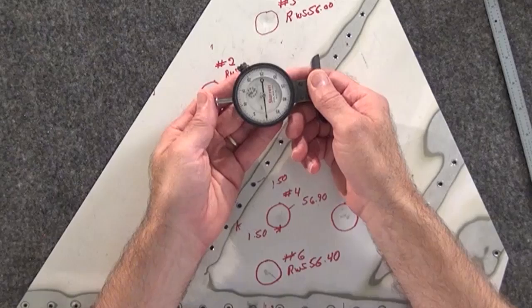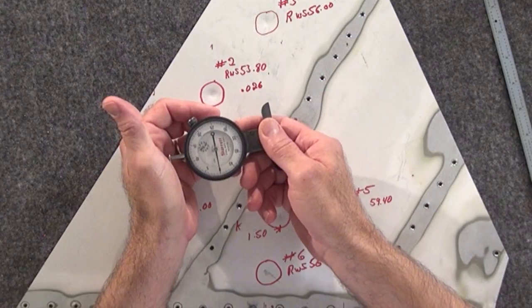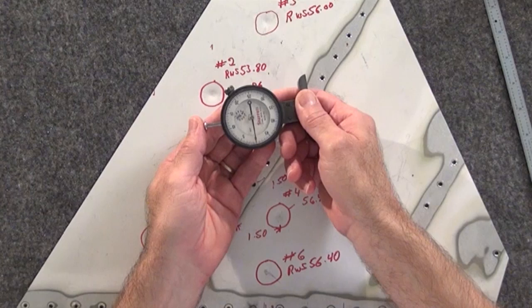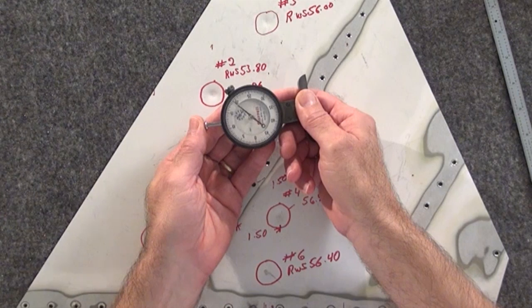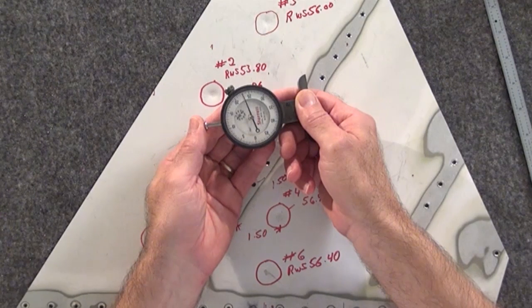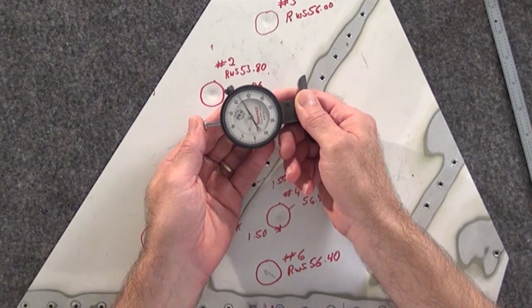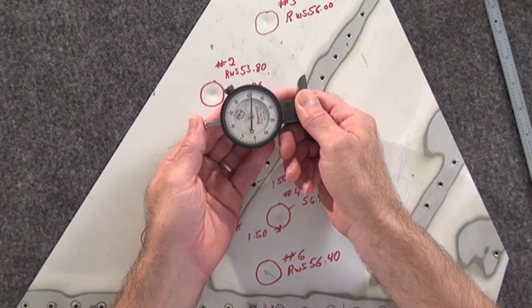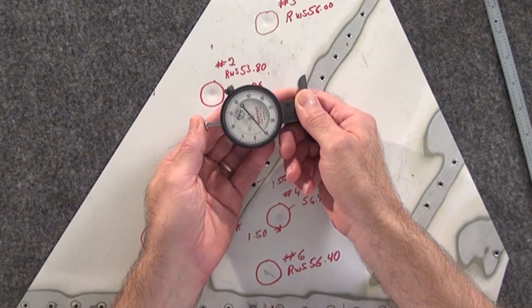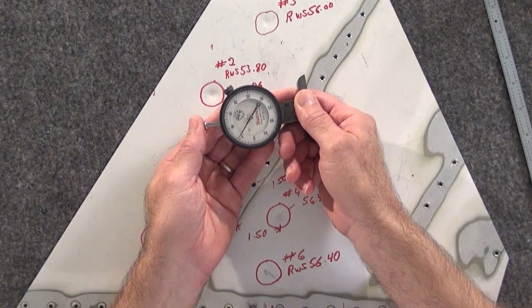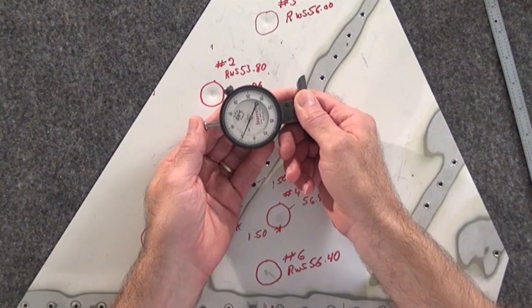So if we compare the measurement that we got with the digital caliper, that would have been, and I'll try to do that on the scale here, right here at 26. But what the actual measurement was, was right about 54.